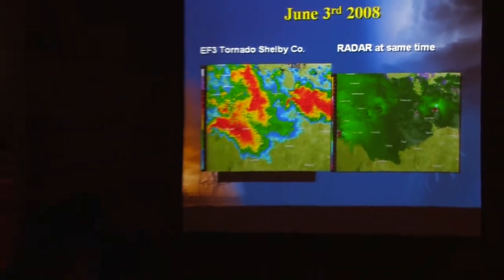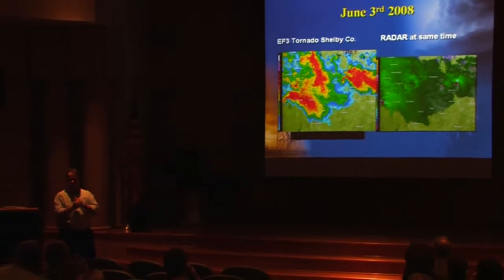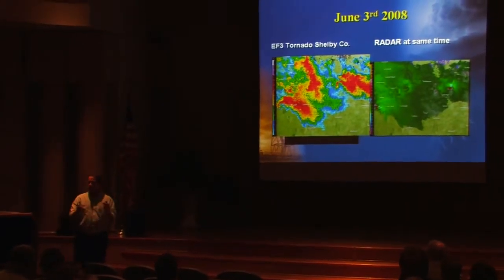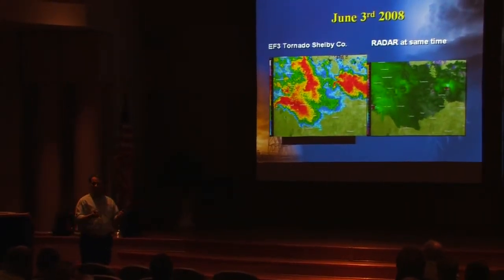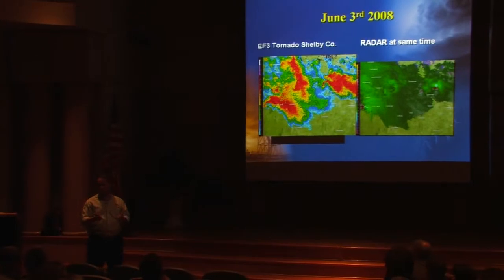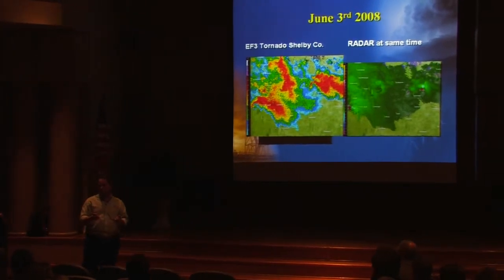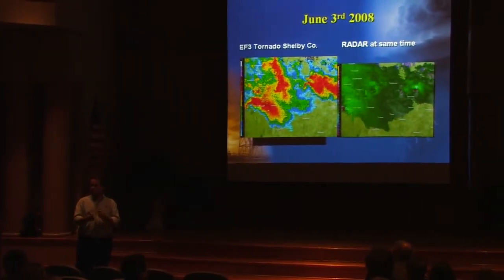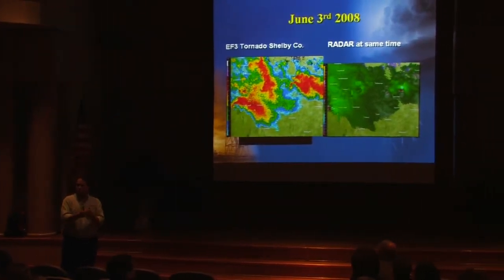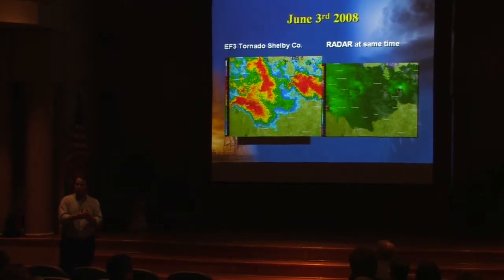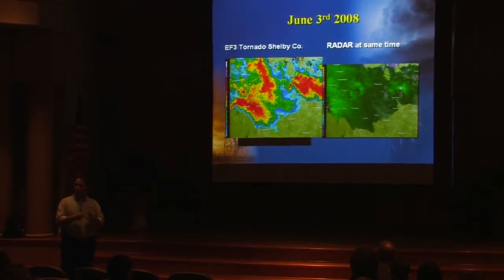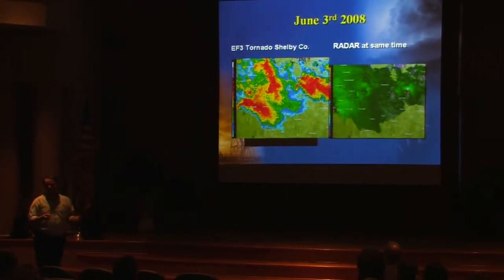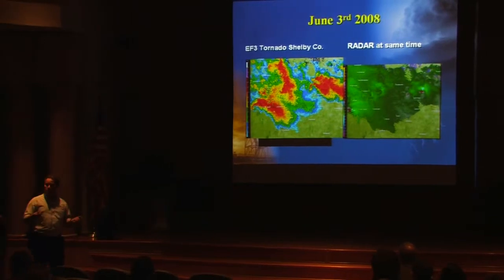That's the mesocyclone or low pressure center. Think back to the scale or the intensity — darker reds and greens indicate weaker wind speeds, bright greens and bright reds indicate strong wind speeds. So in the case of these mesocyclones, the brighter the greens and reds, the stronger the rotation. And if a tornado occurs, it's probably a stronger tornado.